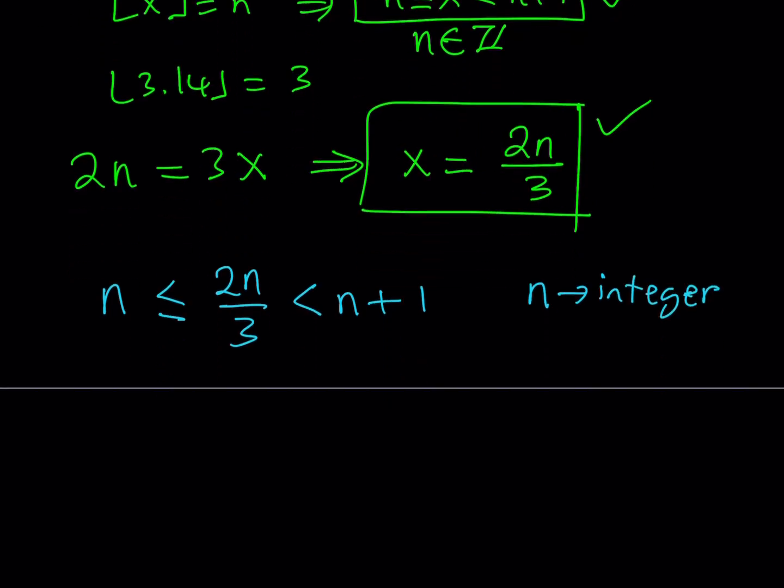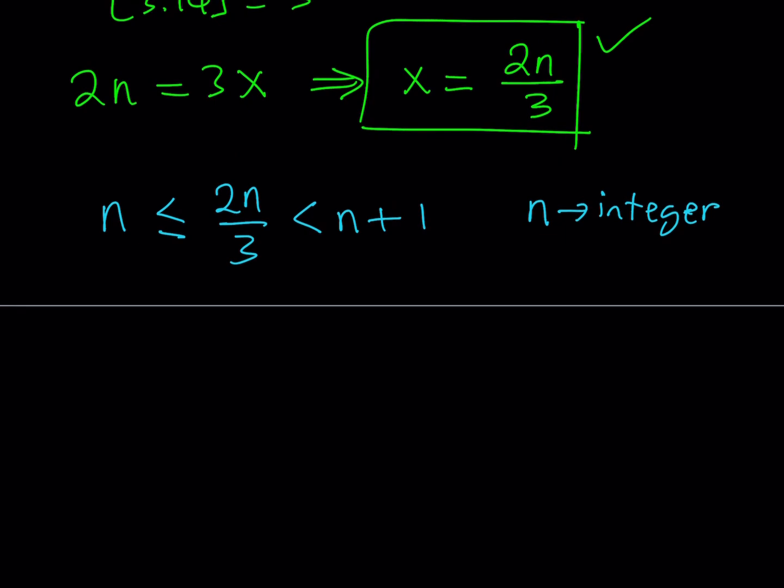All right, let's go ahead and see how we can solve this inequality. And then at the end, we're going to be finding the x values using this equation. So how do you solve this inequality? Well, you can kind of break it down into two inequalities. You can safely say that this means n is less than or equal to 2n over 3, and 2n over 3 is less than n plus 1. That's what it means.